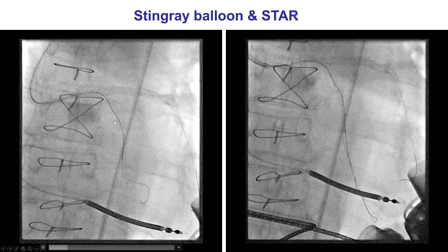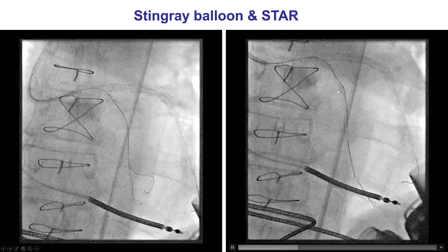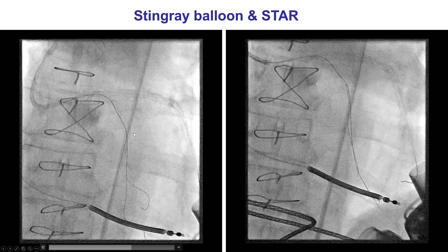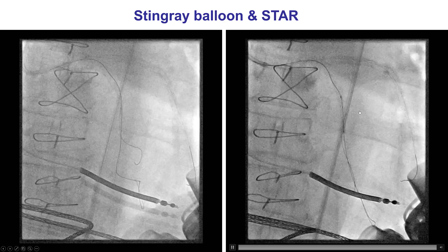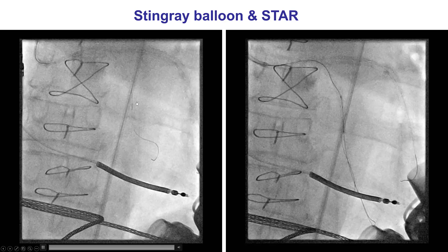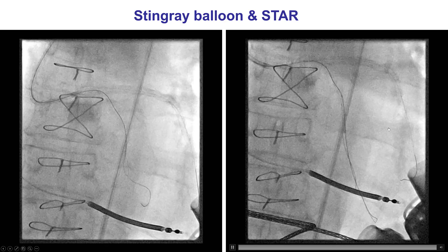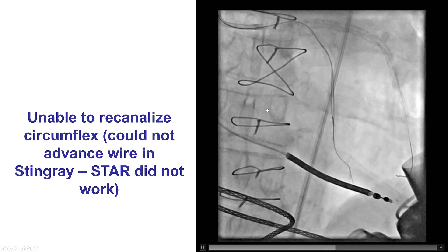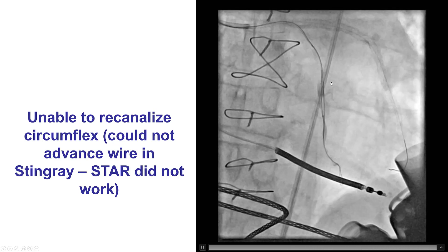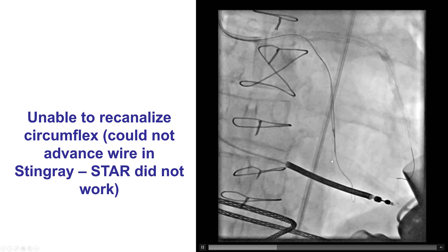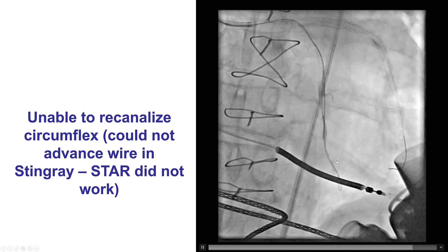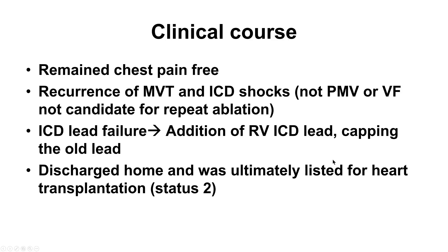This was challenging. How can we re-enter into the distal true lumen? We tried workhorse wires but it was not successful. We then tried a stingray balloon to try to re-enter, but that was also not successful. In the end, we could not get equipment to go through. We tried the STAR technique with a polymer-jacketed wire but did not really get much flow.